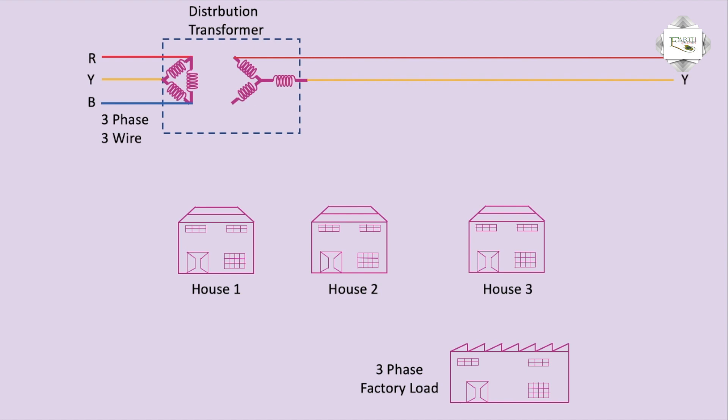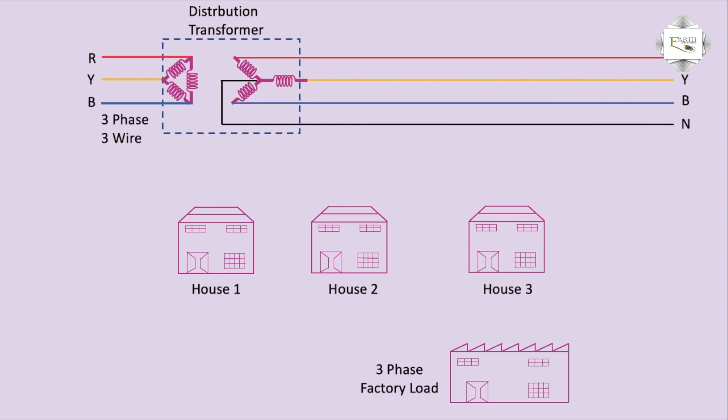First phase, second phase Yellow, third phase Blue connection, and neutral connection outgoing. This means star connection input and outgoing to delta connection. Three-phase line four-wire system: input is three-phase line four-wire system, outgoing is three-phase and neutral.